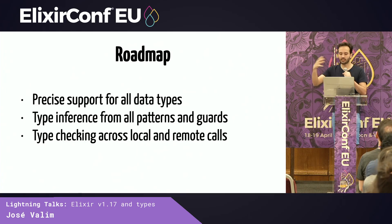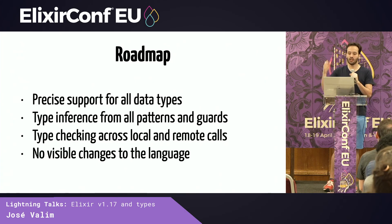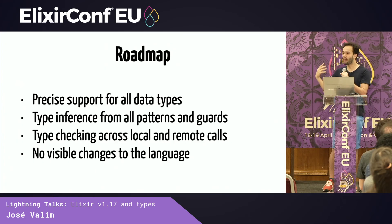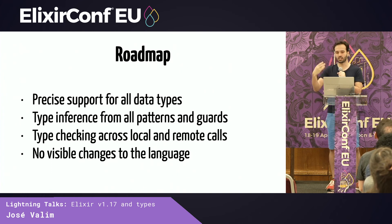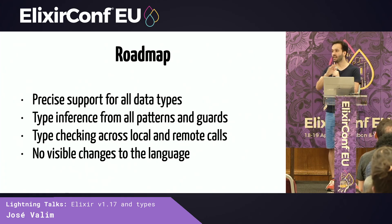After that, we can start type checking local and remote calls, understanding more and more of your code — again, no visible changes to the language at this point. We want to better test the type system, ensure it has good error messages and a good experience. If this works out, we will eventually start having discussions on how you, as a developer, can actually start declaring types in your program. So a lot of work ahead, and that's where we are right now.